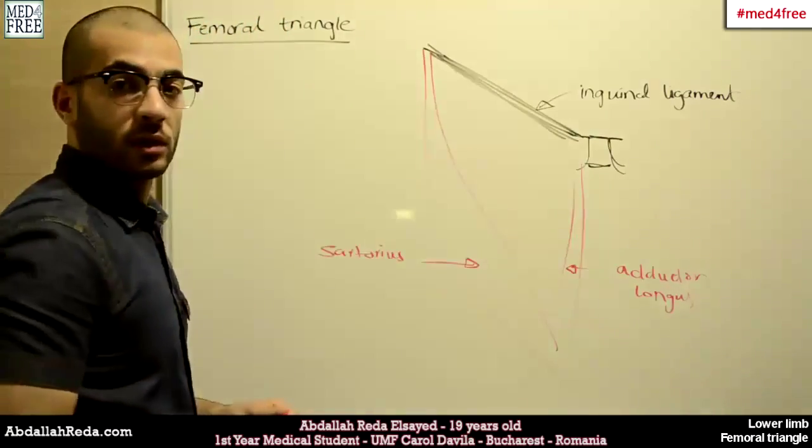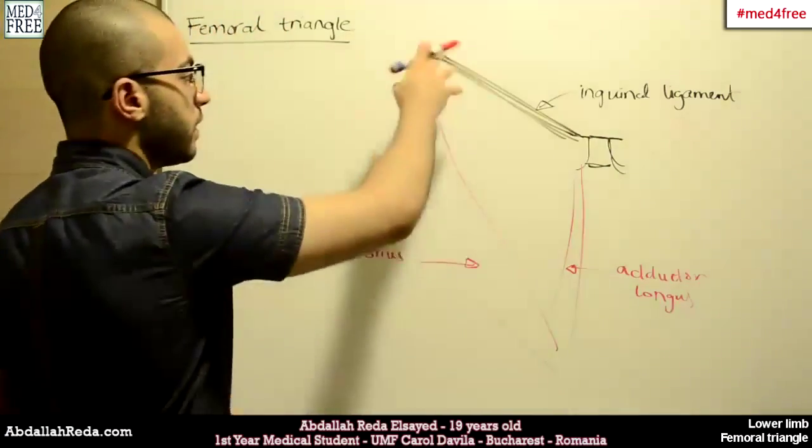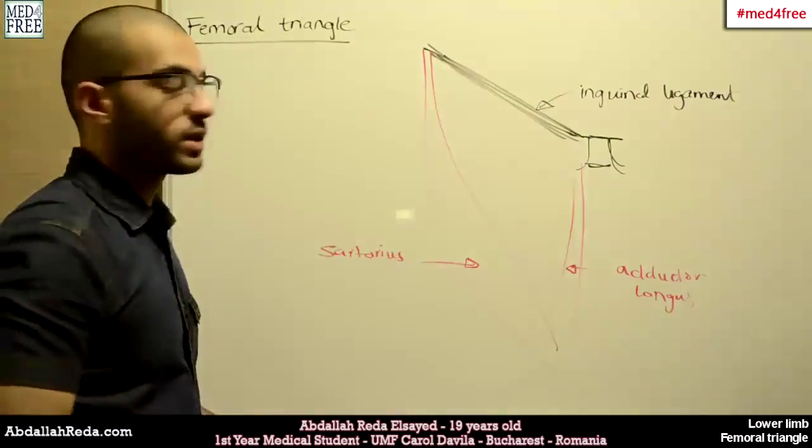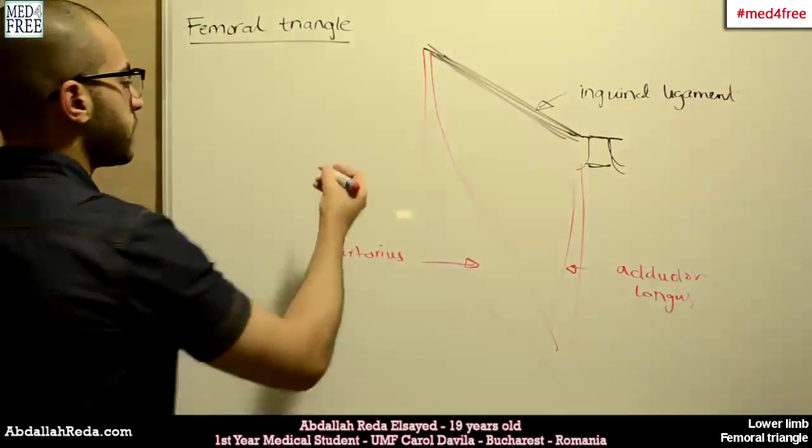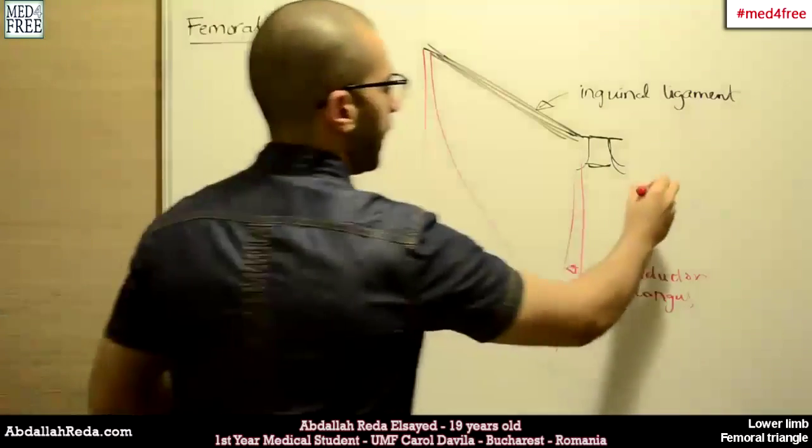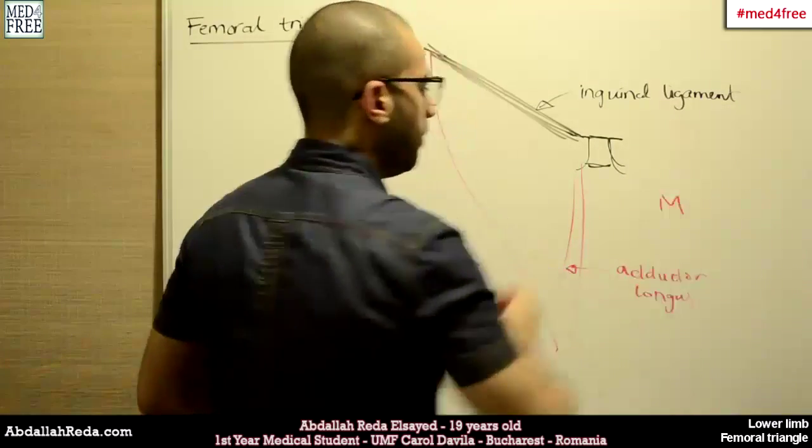and the Inguinal Ligament. These are the three borders of the Femoral Triangle. Of course, this is Lateral and this is Medial.